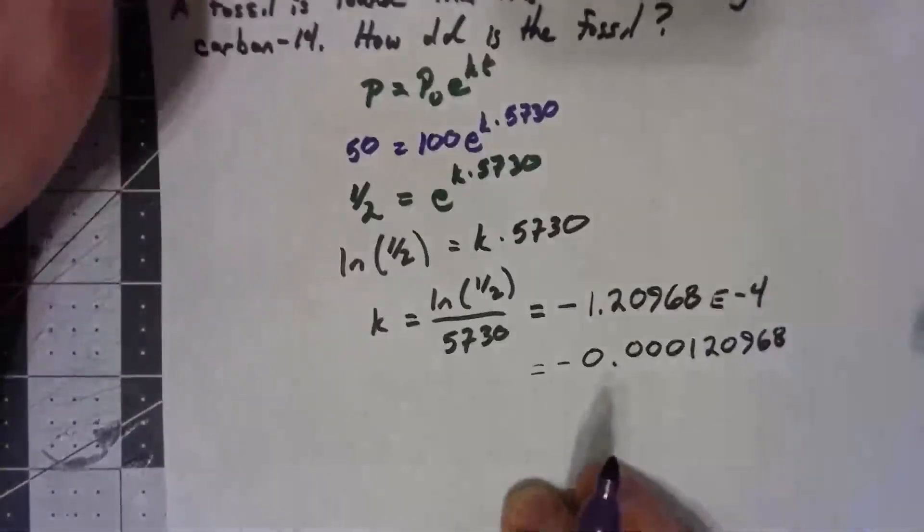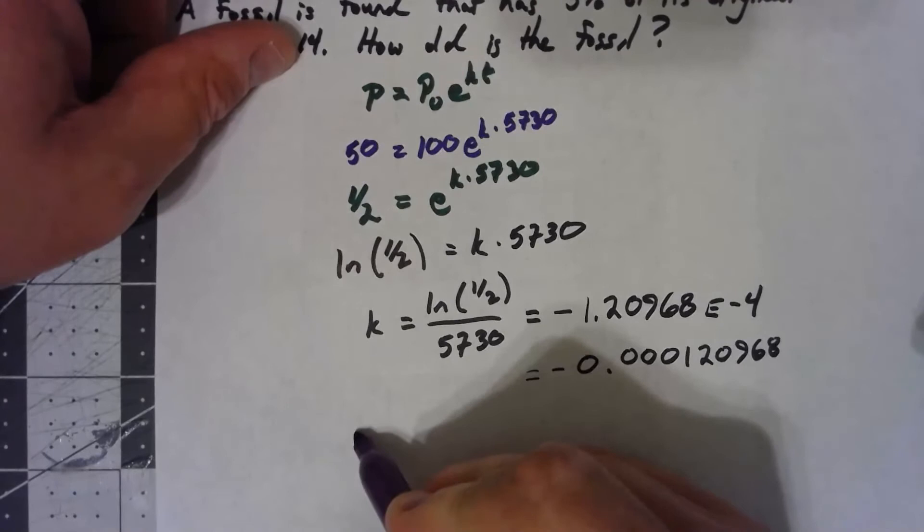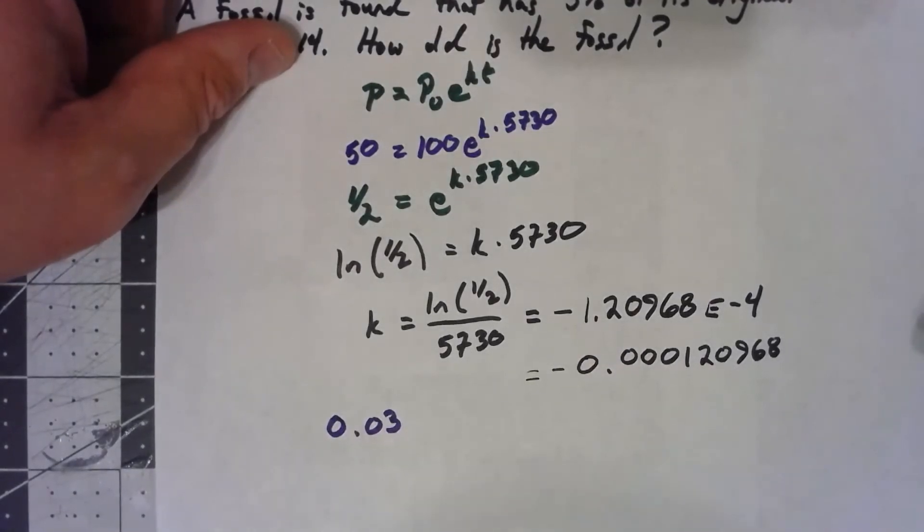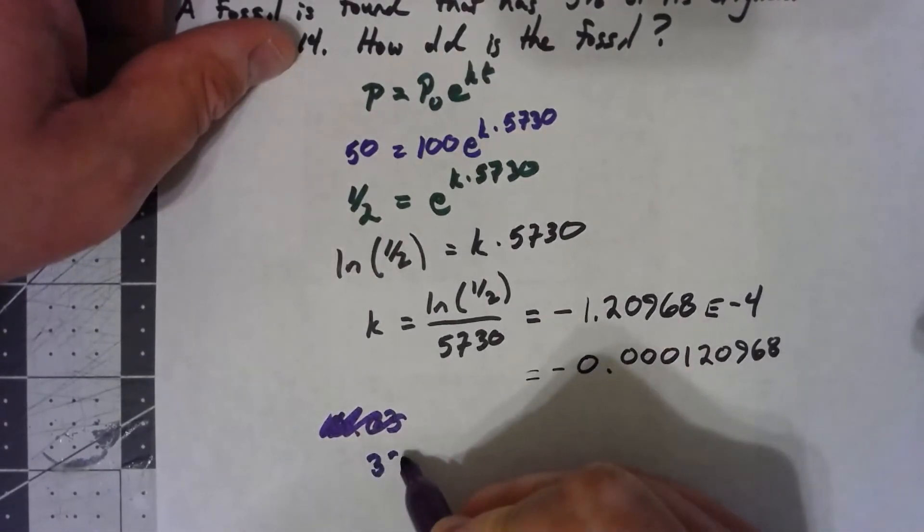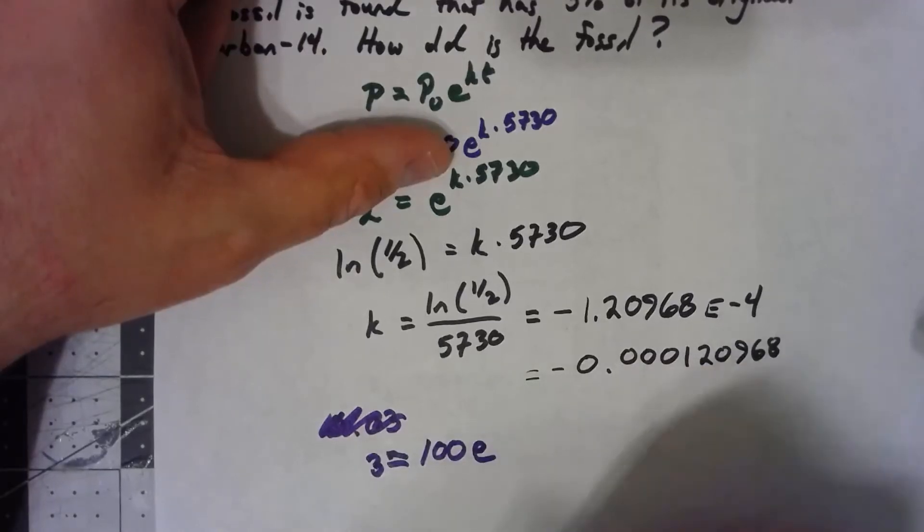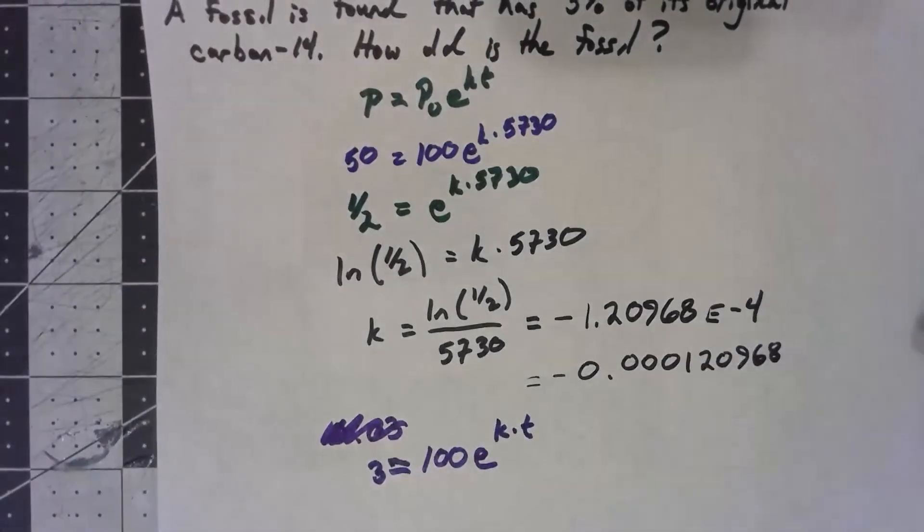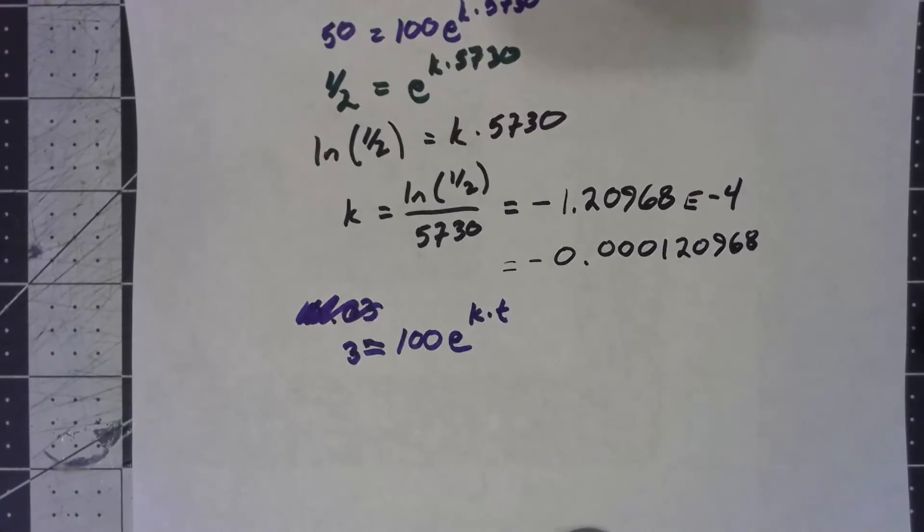So again, using the P equals P₀e^(kt), the population of my fossil is 3% equals 100 times e to the kt. Now, one of the things here, this is just kind of a handwriting trick or way of saving yourself a little bit of work.